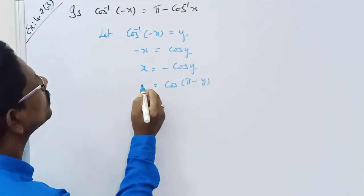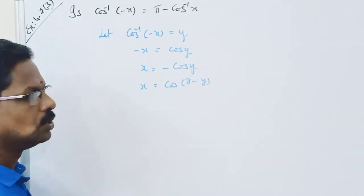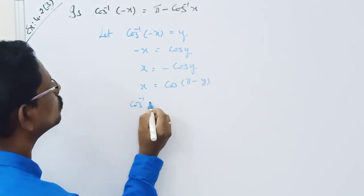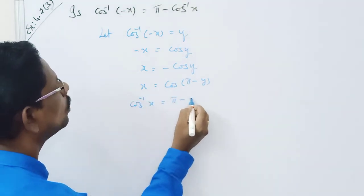Now you see, what is this one? x is equal to... So now cos comes here. Cos inverse of x is equal to pi minus y.